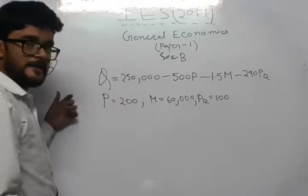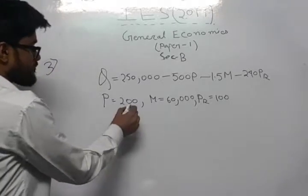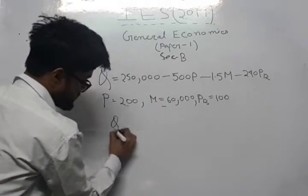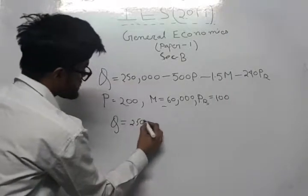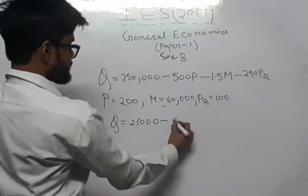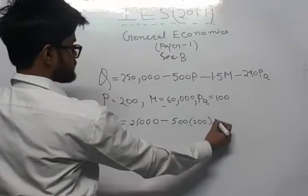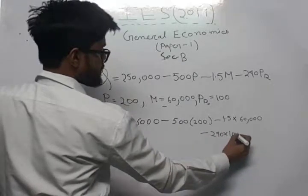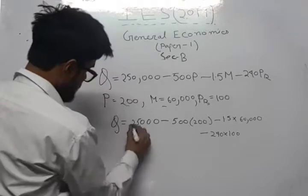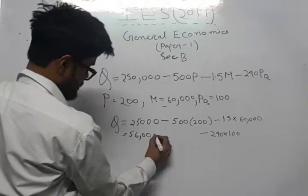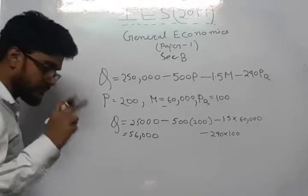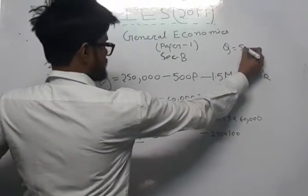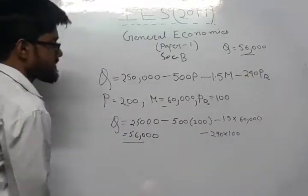First, we have to find the value of Q by substituting the values of P, M, and PR into the demand equation. Q equals 250,000 minus 500 into 200, minus 1.5 into 60,000, minus 240 into 100. Solving this, we get Q equals 56,000.